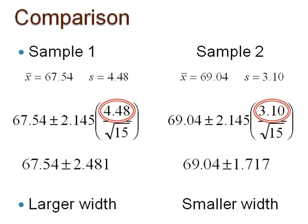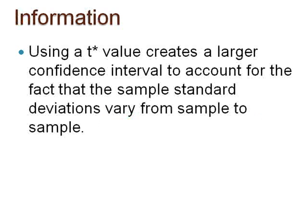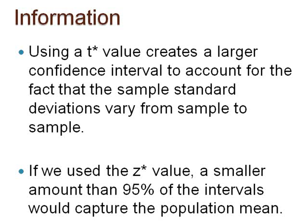Therefore, we note that using a t-star value, which is always larger than the z-star value, creates a larger confidence interval to account for the fact that the sample standard deviations vary from sample to sample. If we use the z-star value, a smaller amount than 95% of the intervals would capture the population mean. Thus, using the t-star value when sigma is unknown allows us to correctly state the interpretation about repeated samples.